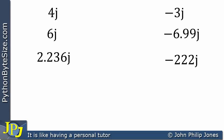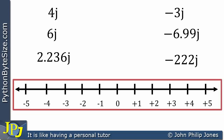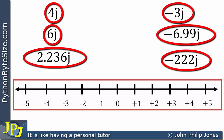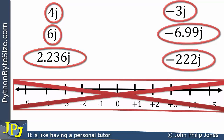If I now look at the real number line and ask the question: where on this real number line can I put these imaginary numbers? Highlighting the entire number line — remembering it goes to infinity in both directions — the answer is that none of these six imaginary numbers can be placed on the real number line.